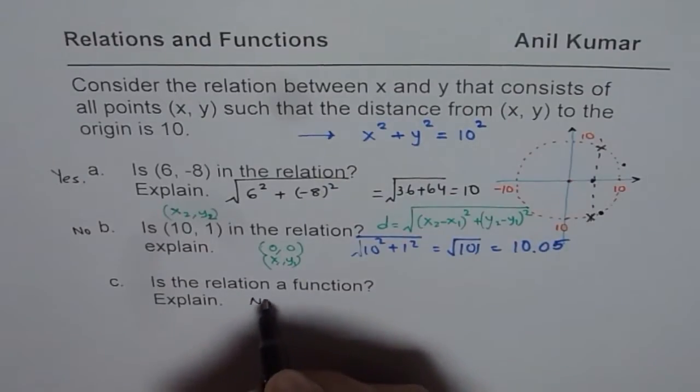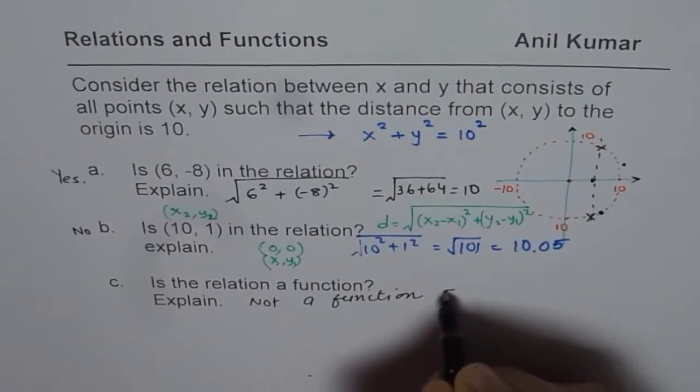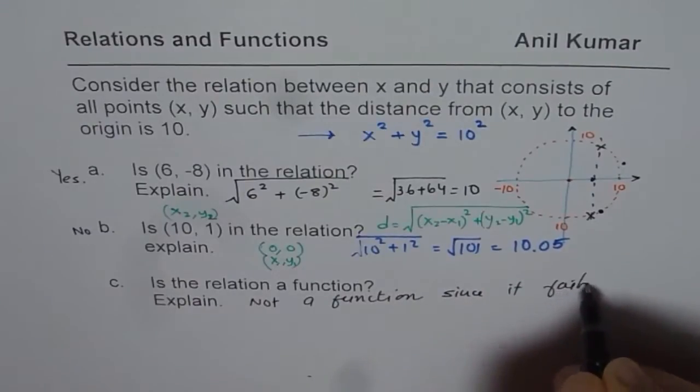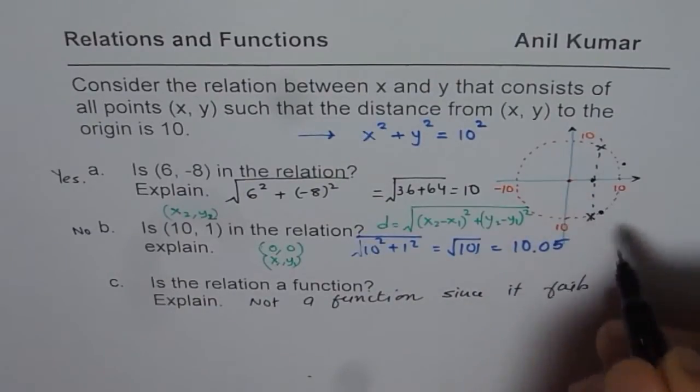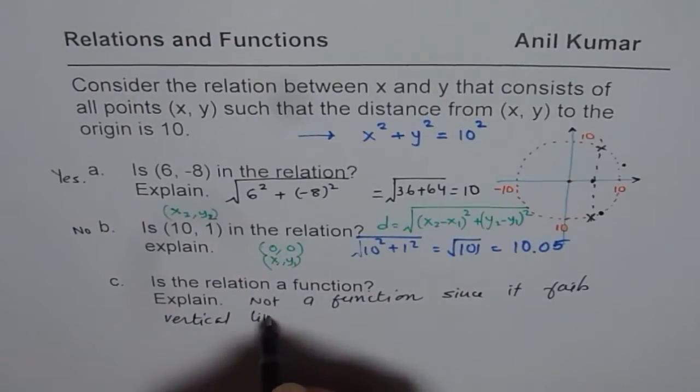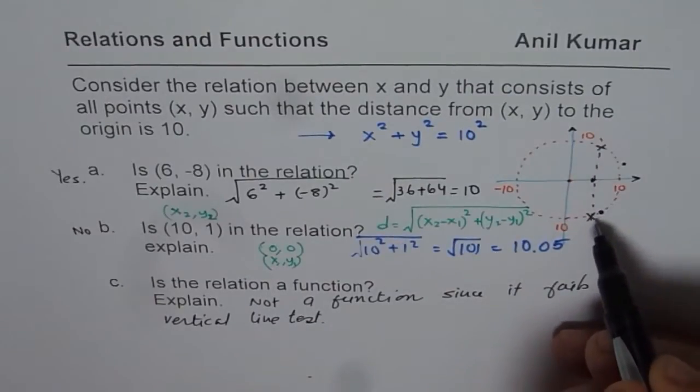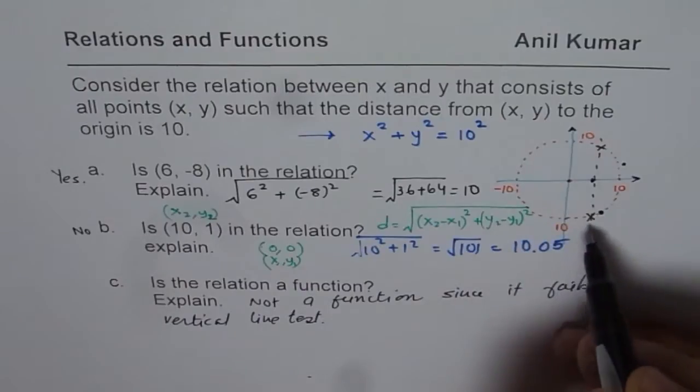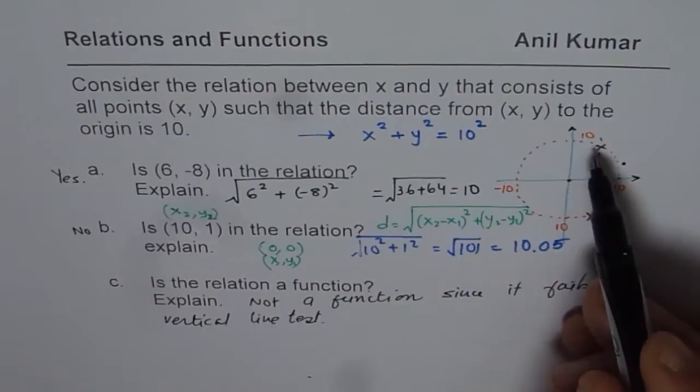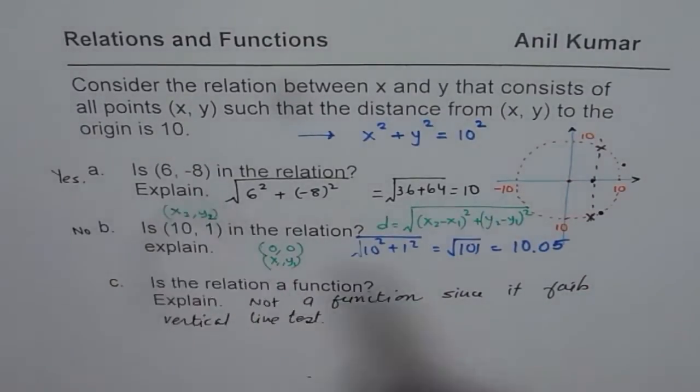Since it fails. If we sketch it and explain, we can also say it fails vertical line test. Vertical line test is that if you draw a vertical line and it intersects the graph of the function at two points, in that case, we will say it fails. But when we are considering coordinate points, you could give some example.